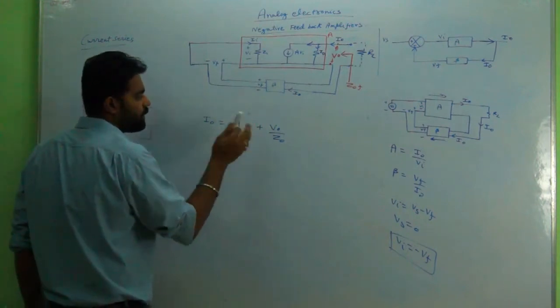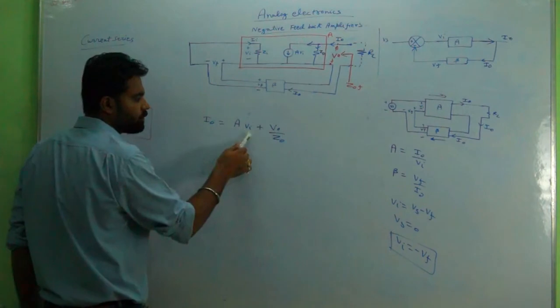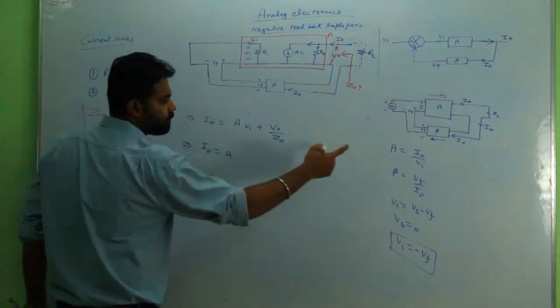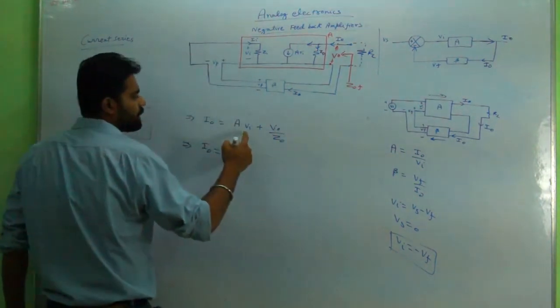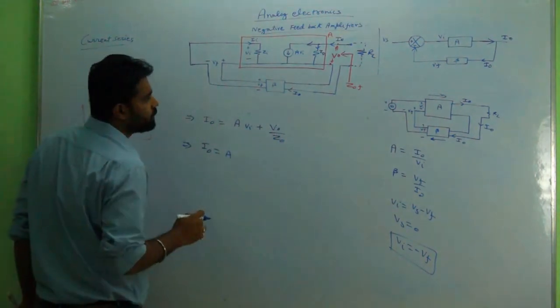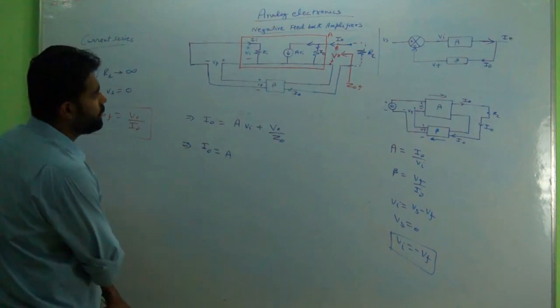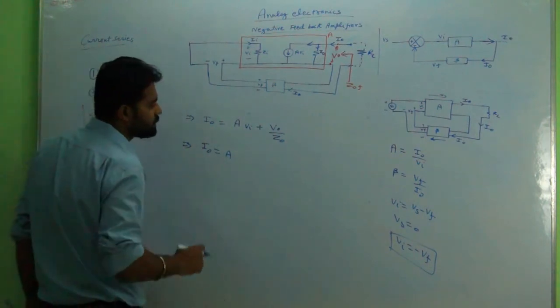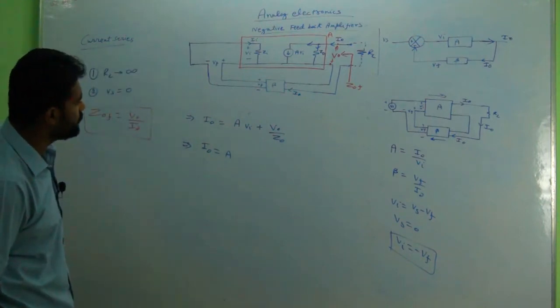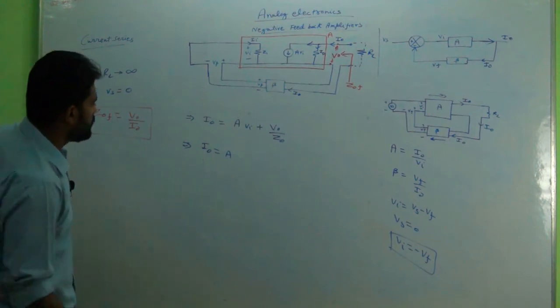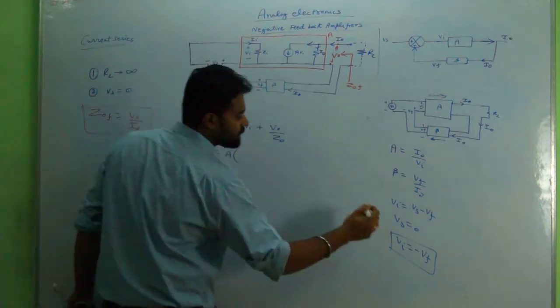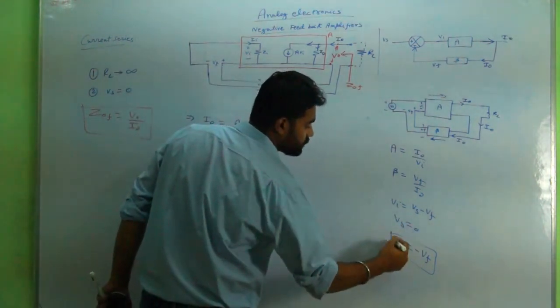v_naught and i_naught are required. Whatever has to be done to v_i will be done. So i_naught equals A into v_i. v_i can be written, or v_naught, there are a lot of stuff here. So accordingly will write what is the nearest one or least number of steps are required. A into v_i can be written after doing the simplification.